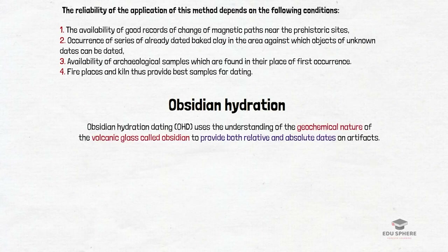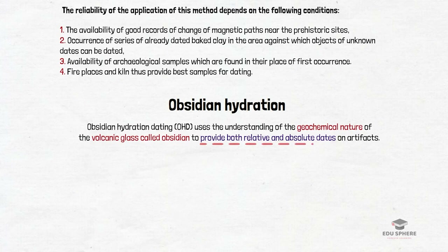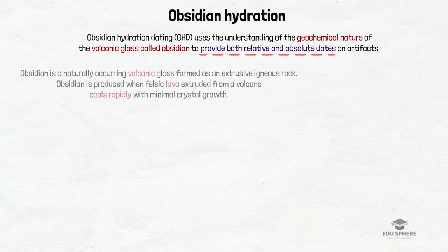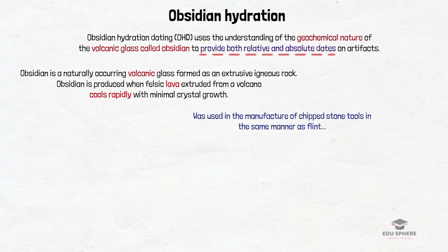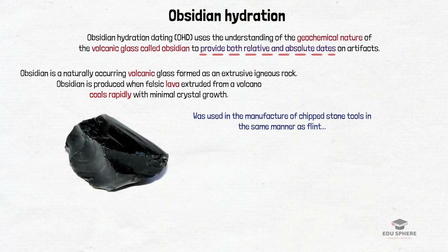The third dating method is obsidian hydration dating, a scientific technique which uses the understanding of the geochemical nature of a volcanic glass called obsidian to provide both relative and absolute dates on artifacts. Obsidian is a volcanic glass that was used by prehistoric people as a raw material in the manufacture of stone tools such as projectile points, knives, and other cutting tools. It is very easy to work with, very sharp when broken, and comes in a variety of colors such as black, orange, red, green, and clear.